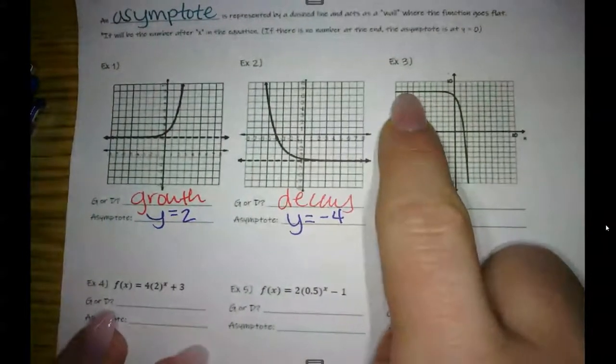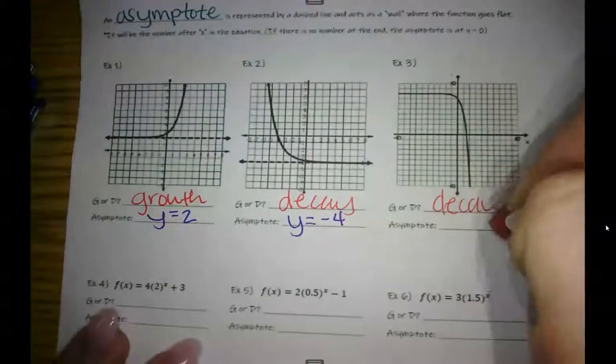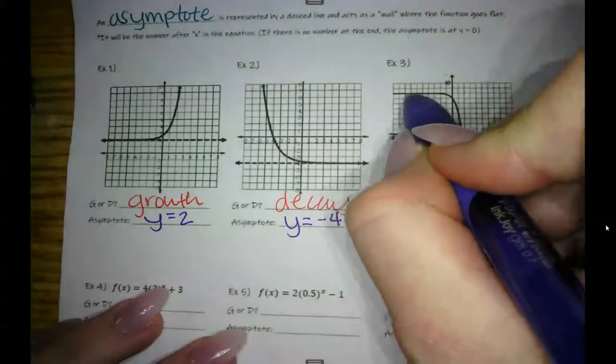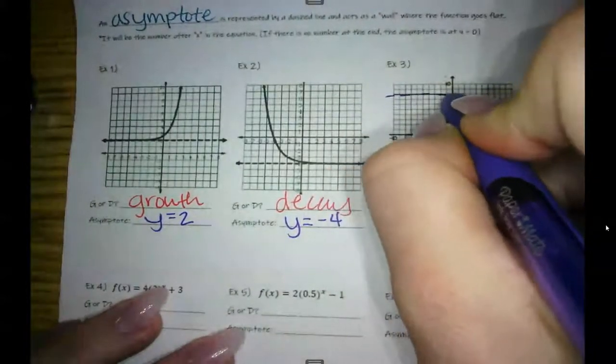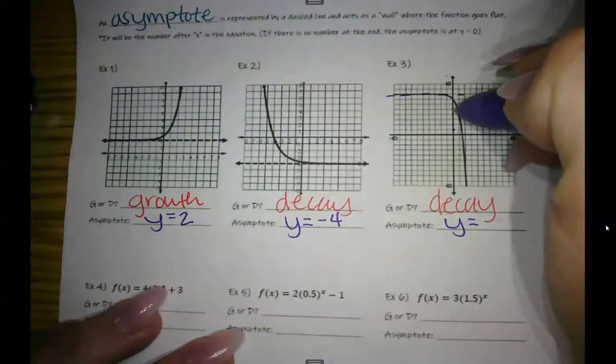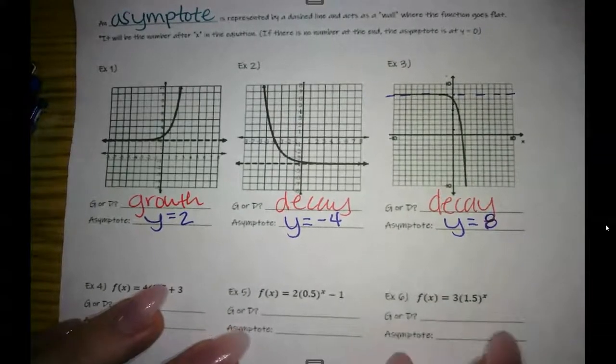So this last example, tracing, tracing. Oh, I'm going down. That's a decay. This example doesn't have it drawn out for you. But we can see where's this topping out at right here. So again, y equals, and then I'm going to count 1, 2, 3, 4, 5, 6, 7, 8. That's y equals 8. That's topping out at.